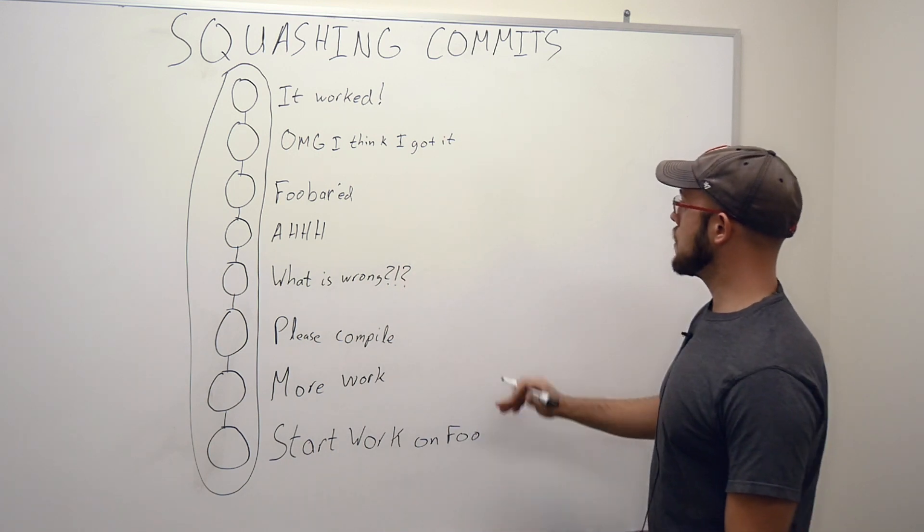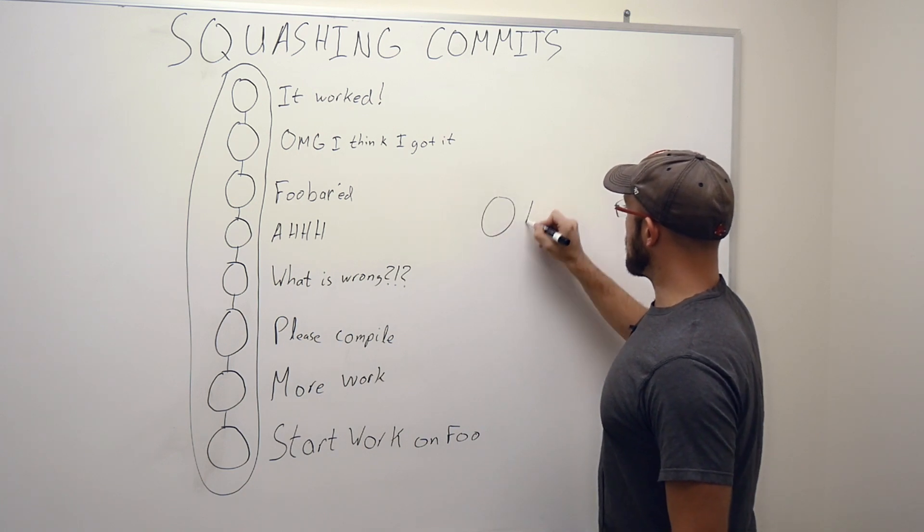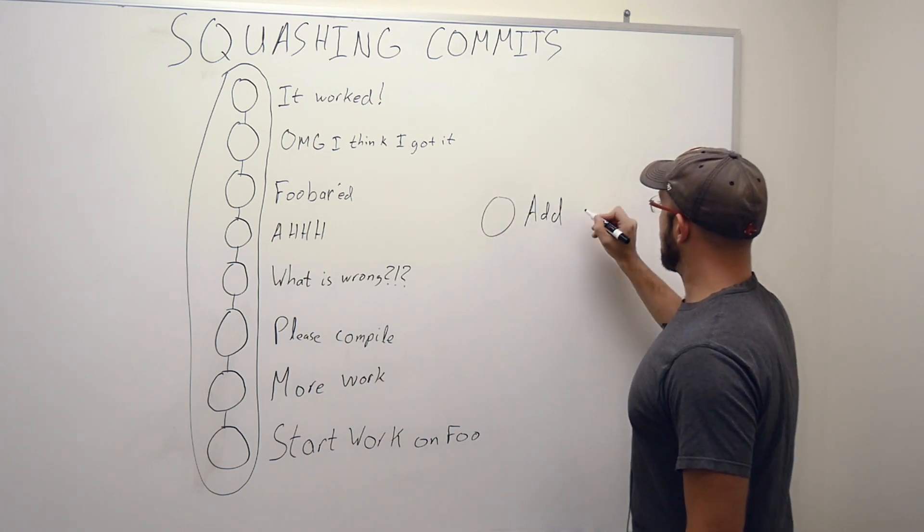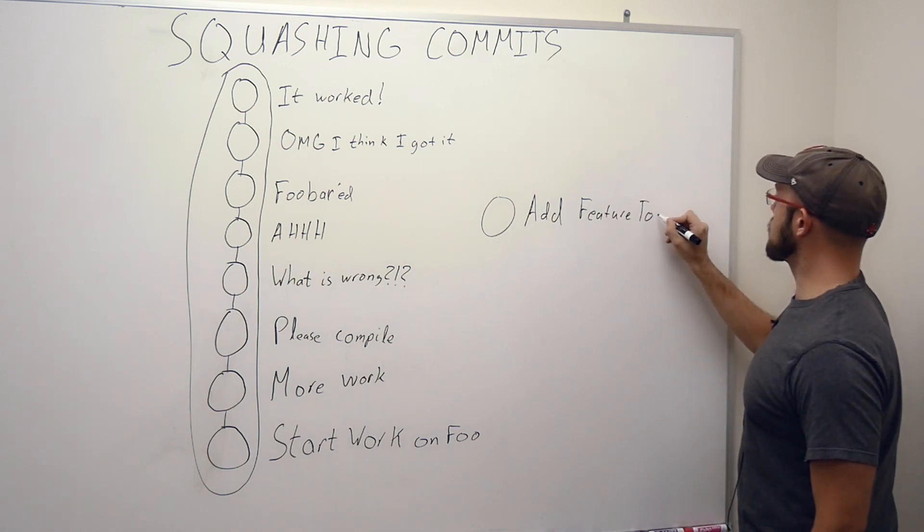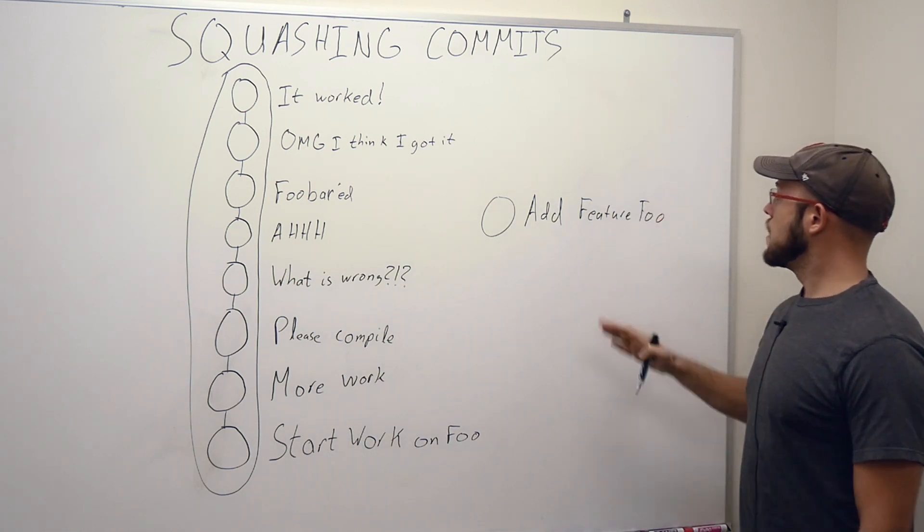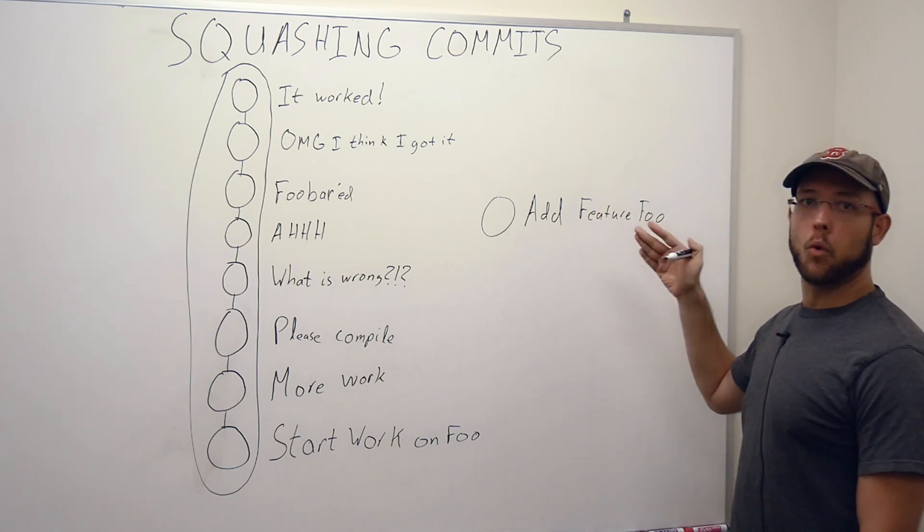And we would take all of those and now make one that says we add feature foo. And this would be a more detailed commit saying what this does, what it affects.